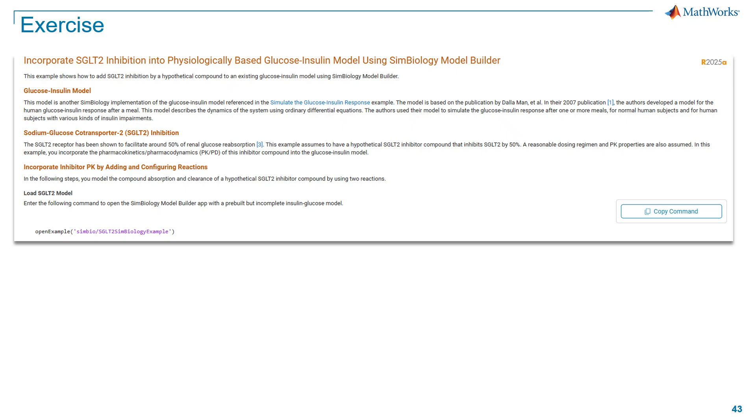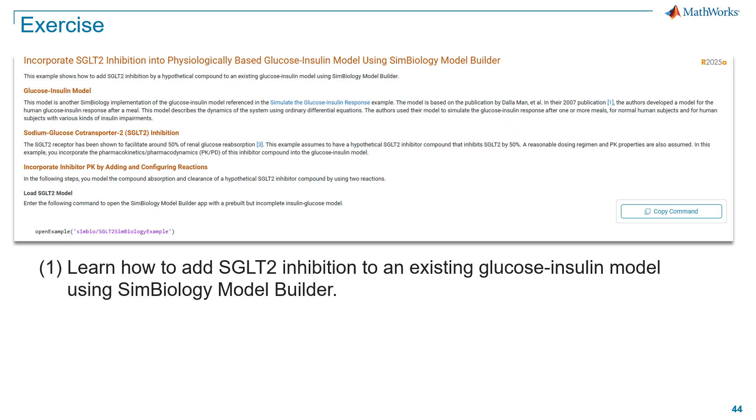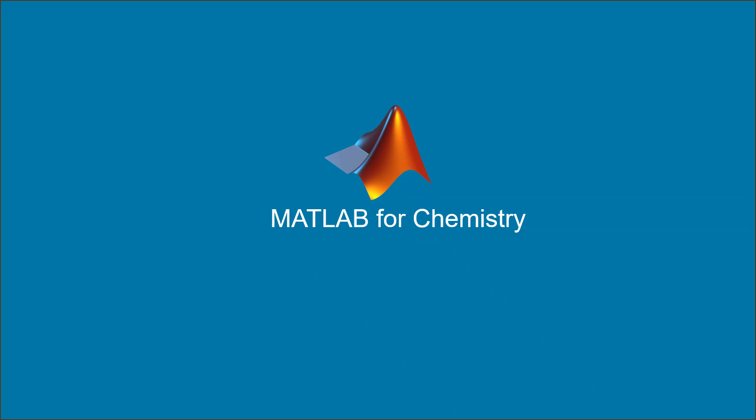As always, let's wrap up this session with an engaging exercise. Visit this example page on mathworks.com. On this page you will find a step-by-step tutorial on how to add SGLT2 inhibition to an existing glucose-insulin model using SimBiology Model Builder. As you explore that example, consider how the bioavailability model you just built in today's video could be integrated into the system. This would create a powerful end-to-end workflow connecting your cheminformatics-based candidate selection to a real-world pharmacological model for treating type 2 diabetes. Thank you again for watching and see you in the next MATLAB for Chemistry video.